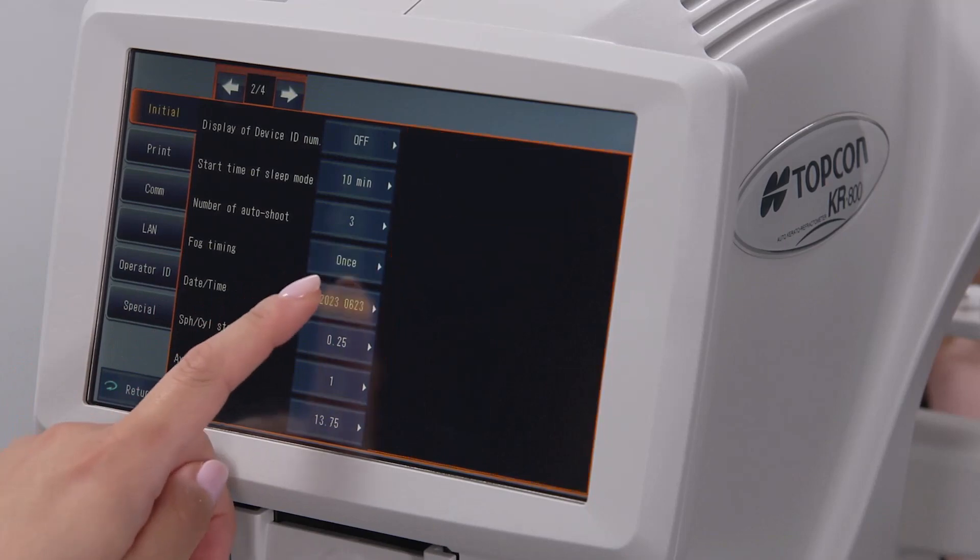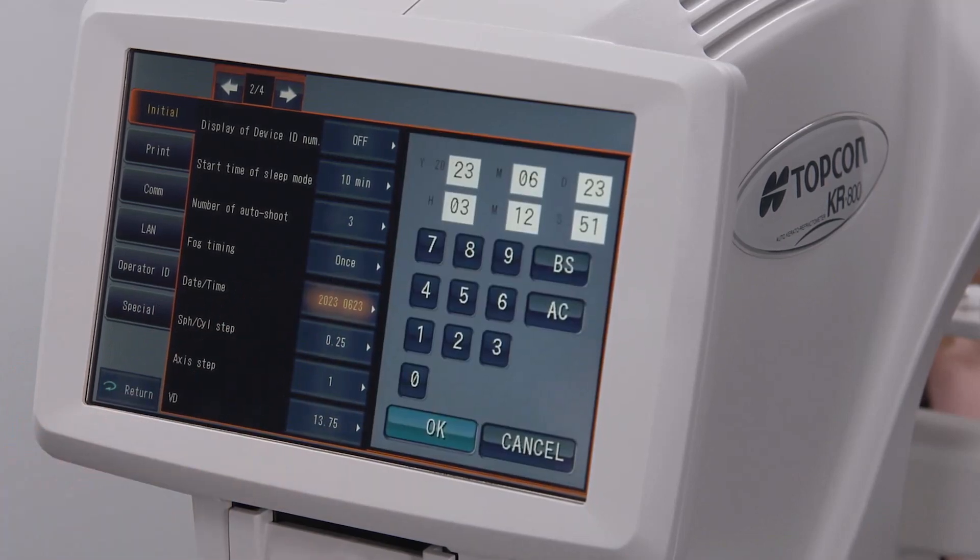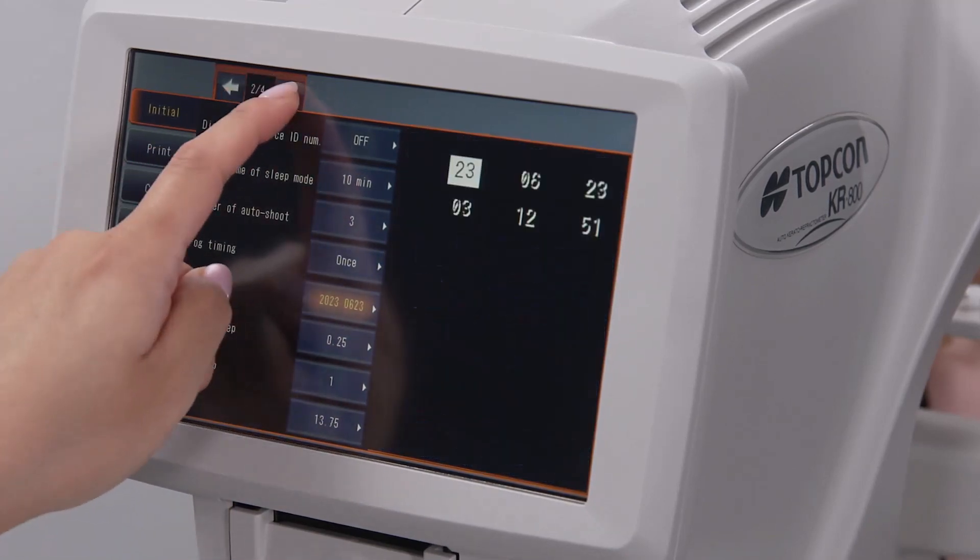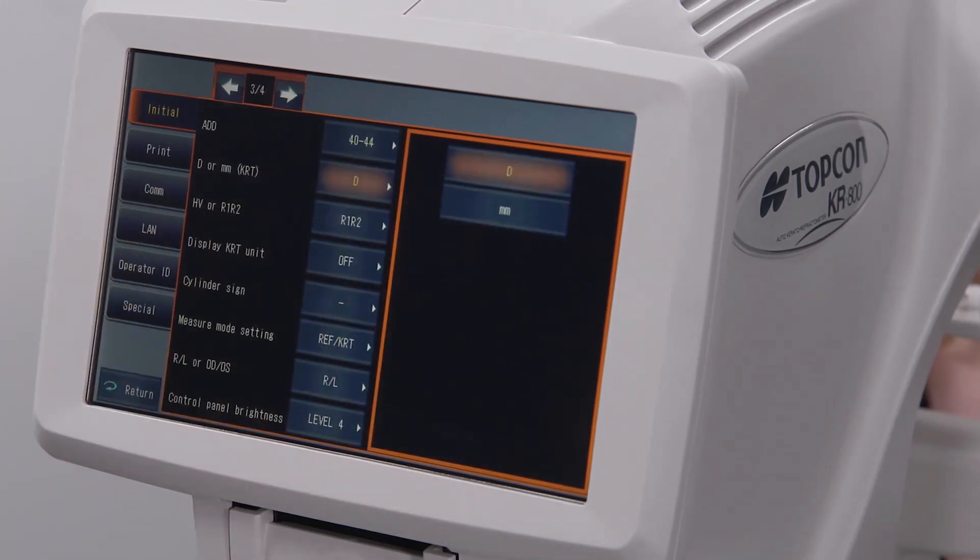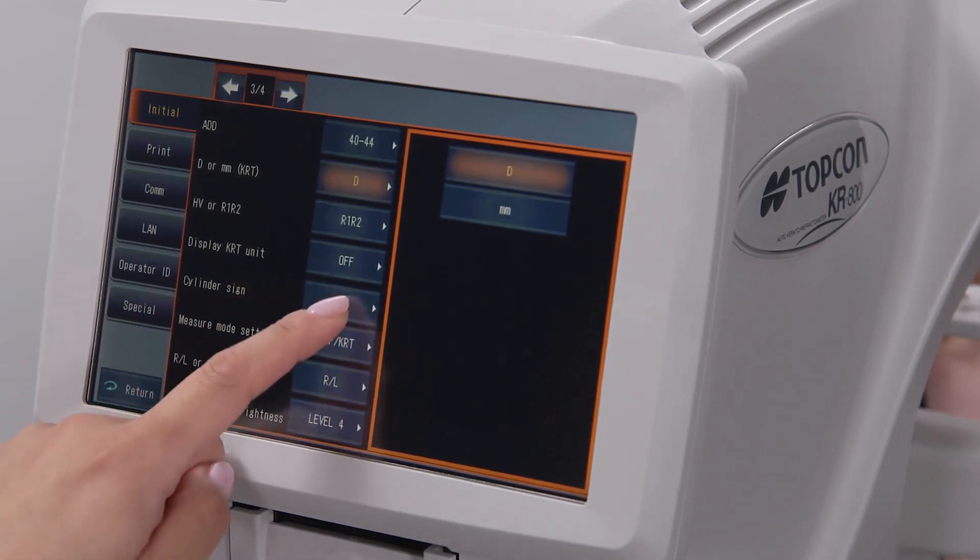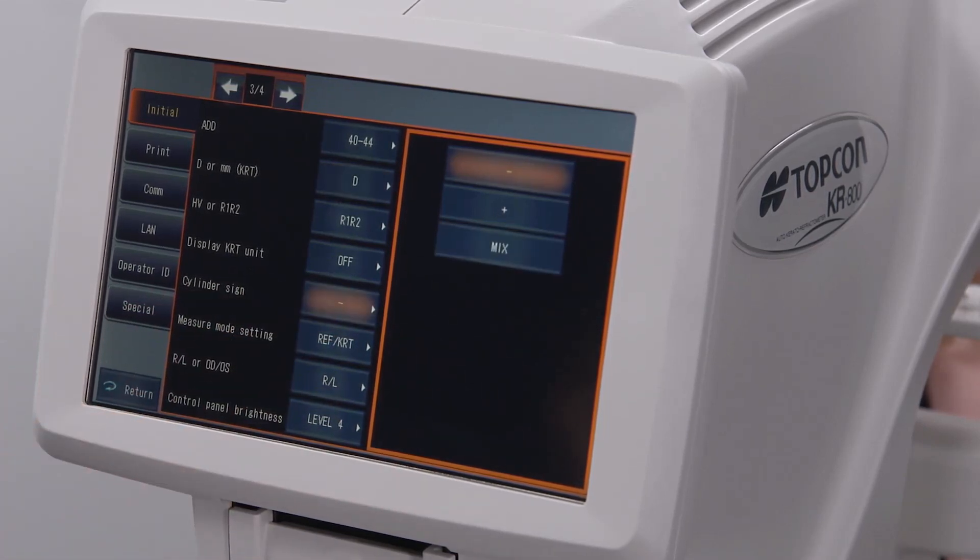Date and time allows you to set the current date and time. Diopter or millimeter determines the units of keratometry. Cylinder sign determines whether the autorefraction results will be displayed in plus or minus cylinder.